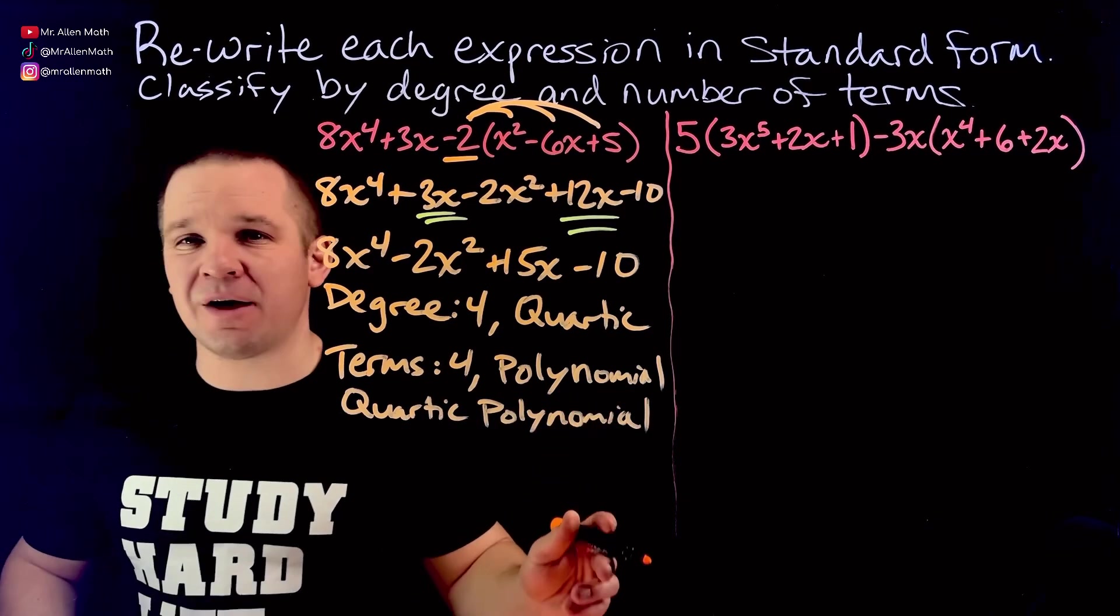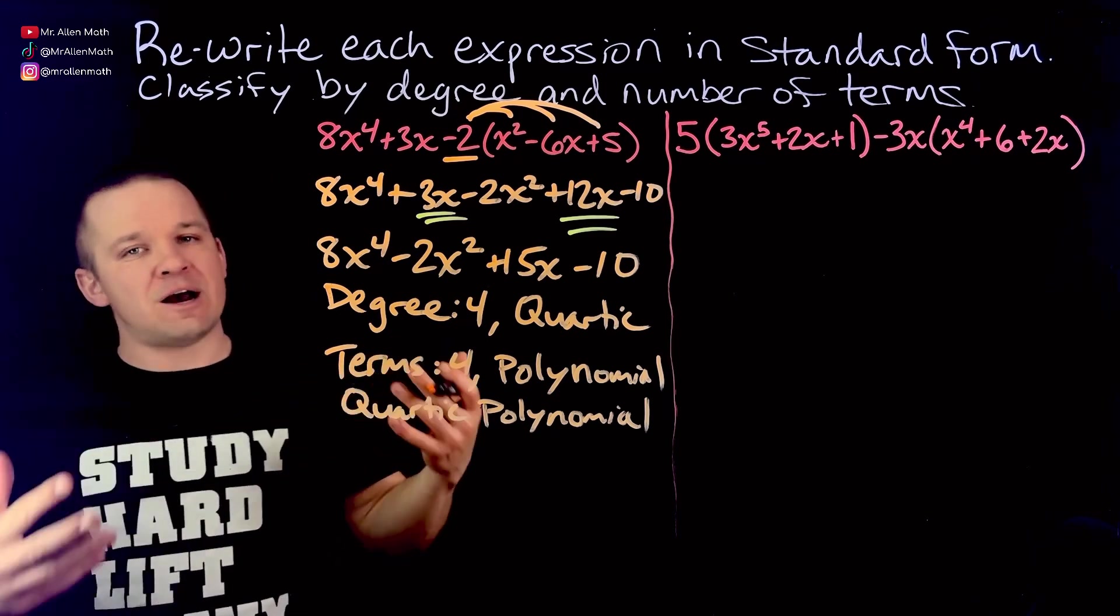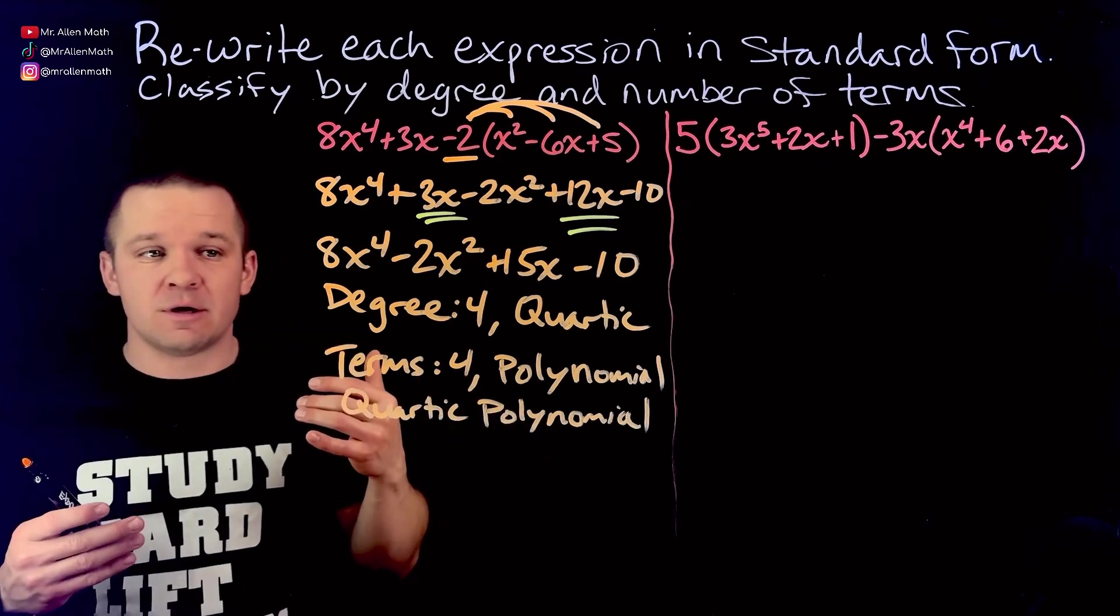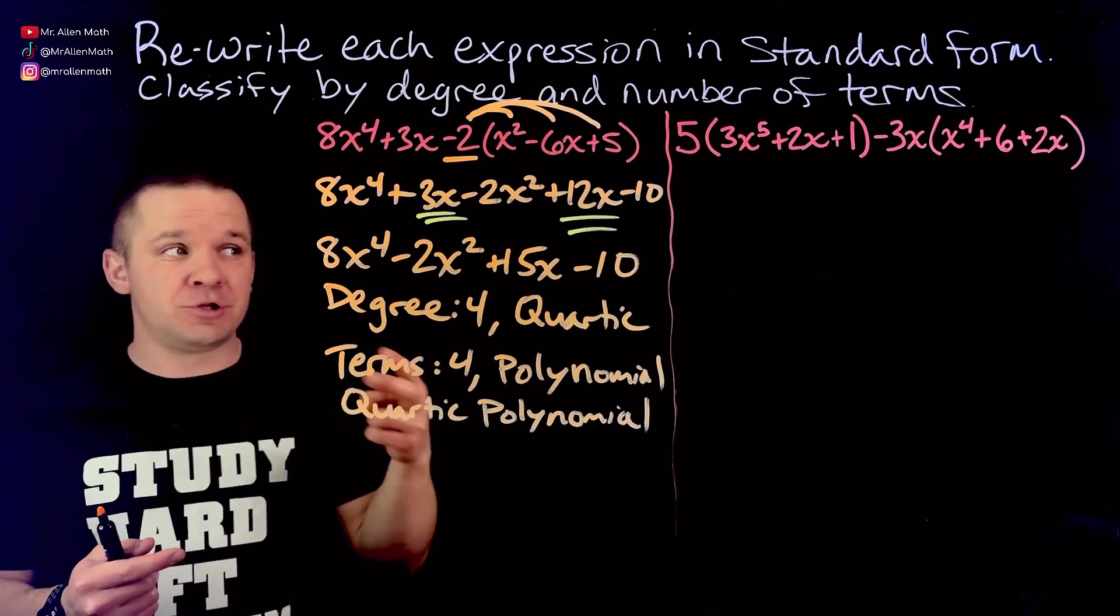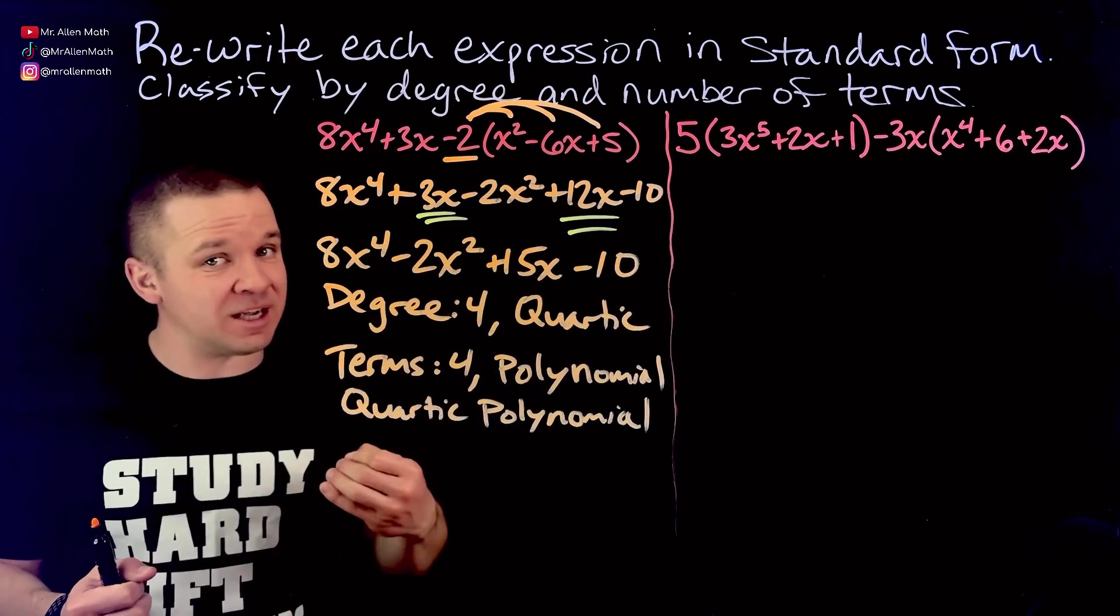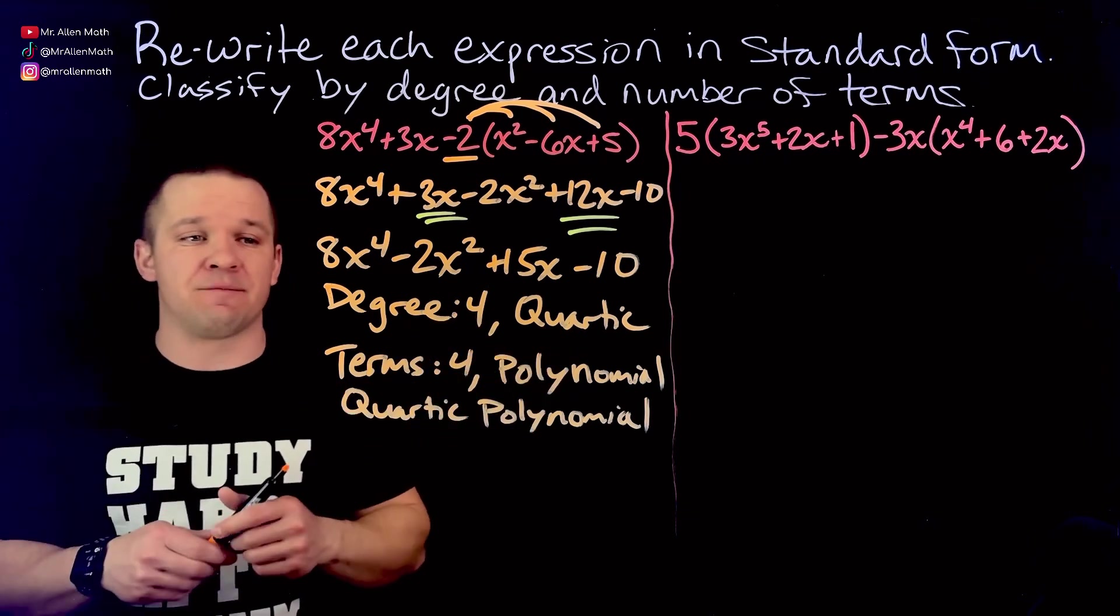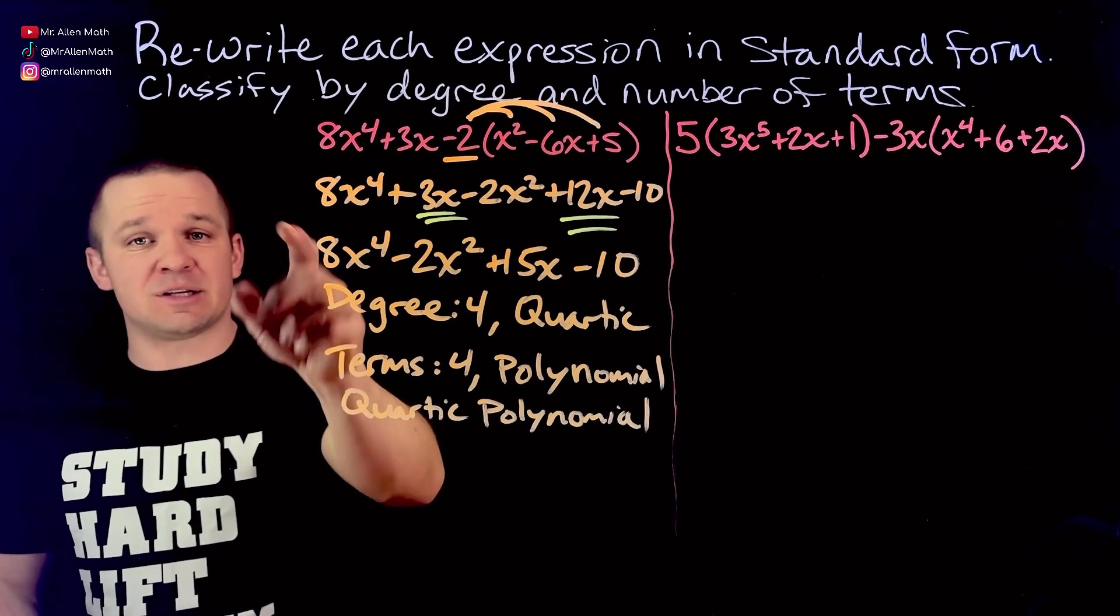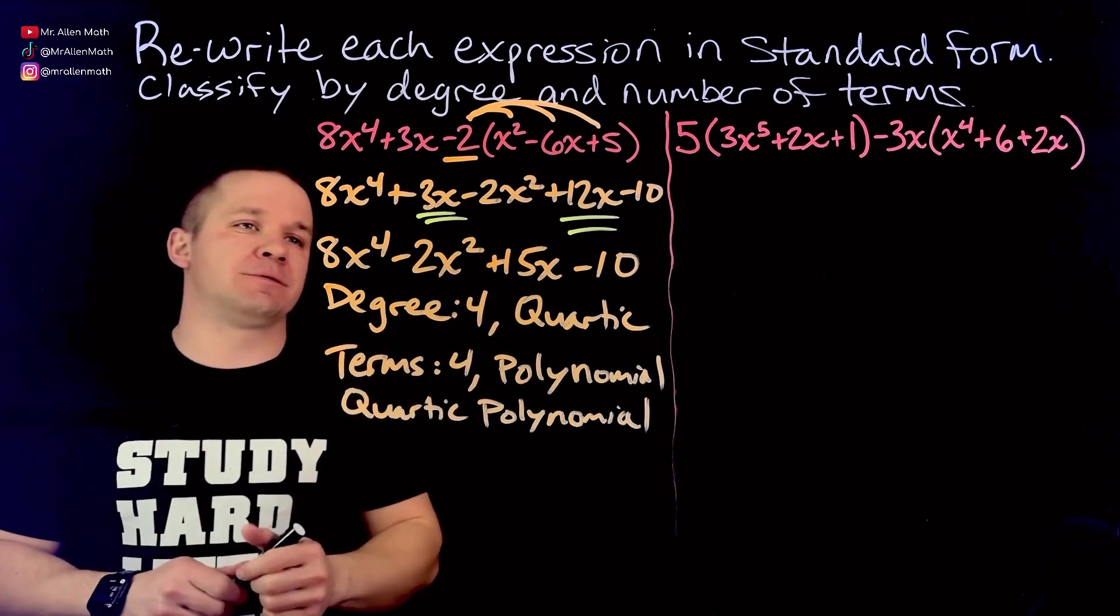It also helps some people like to cross these things off as they combine them. You can on your paper and pencil cross off as you write them down so you don't write something down twice and you also don't forget something. So here we go, we are in standard form. Now I just need to classify by degree and number of terms. My highest degree is four, they may also ask for the lead coefficient, that's eight. It's the number in front, the coefficient of the highest degree term. So degree is going to be four, so that is a quartic.